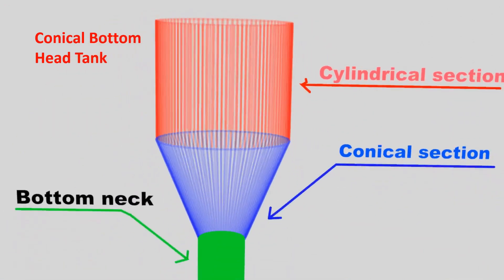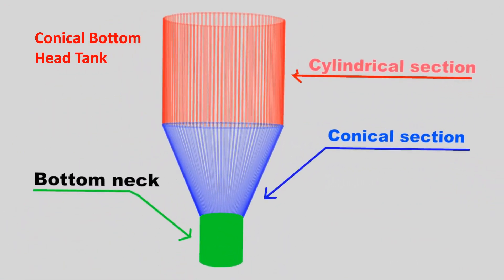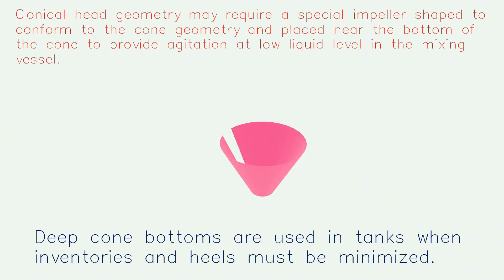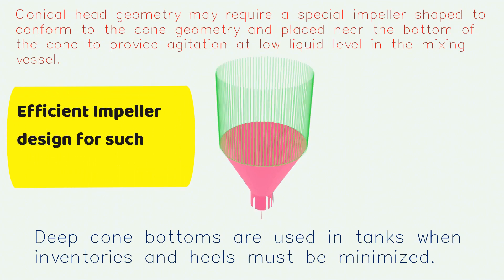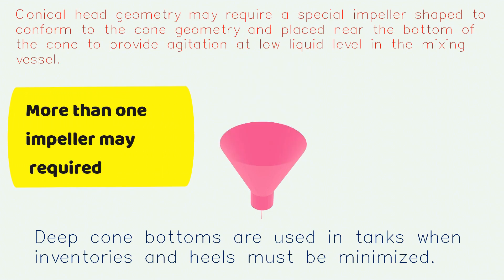Conical bottom head tanks may be used for mixing, but due to the very steep angle of the cone and greater depth, some special type of impeller may be required. It can be very difficult to rise up with concentrated solid, and no mixing will happen in the lower section without some special arrangement.